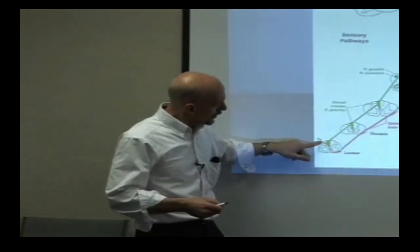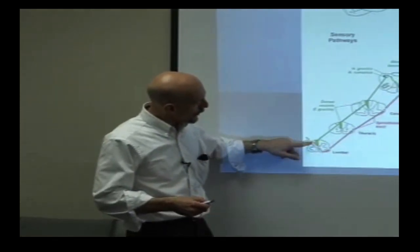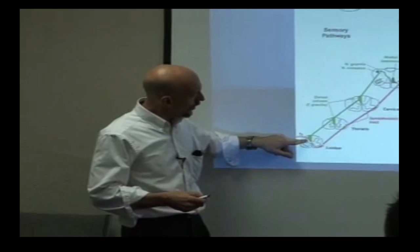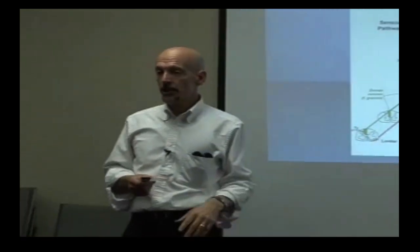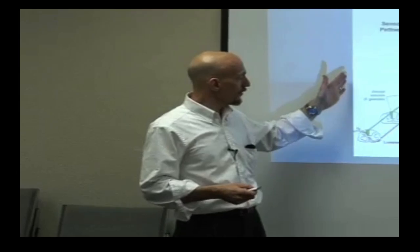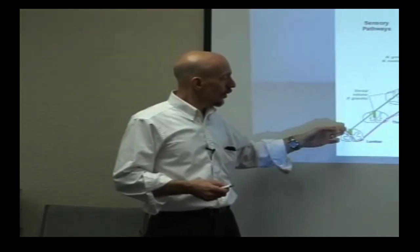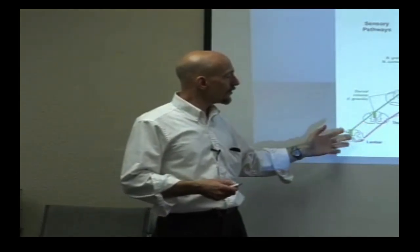This is the spinothalamic tract, which is basically your pain pathway. Its second-order neuron crosses because it synapses here. So if I have a lesion in the periphery, depending upon where it is, I can figure out from these two pathways: is it in the peripheral nerves, at the spinal cord, the brainstem, the cerebellum, or the cerebrum?